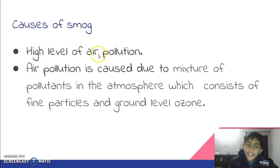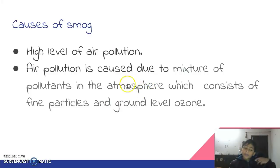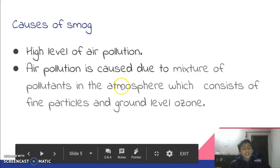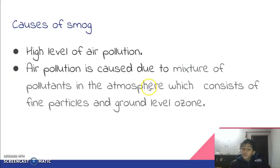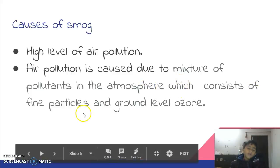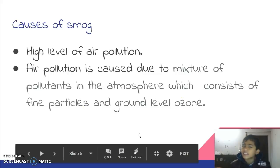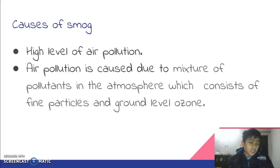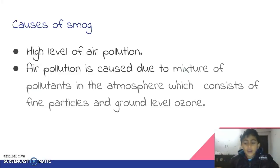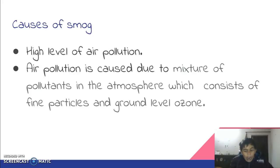Causes of smog: high level of air pollution. Air pollution is caused due to a mixture of pollutants in the atmosphere, which consists of fine particles and ground level ozone. Don't think that this ozone protects us from ultraviolet rays — it is another type of ozone which can harm us.